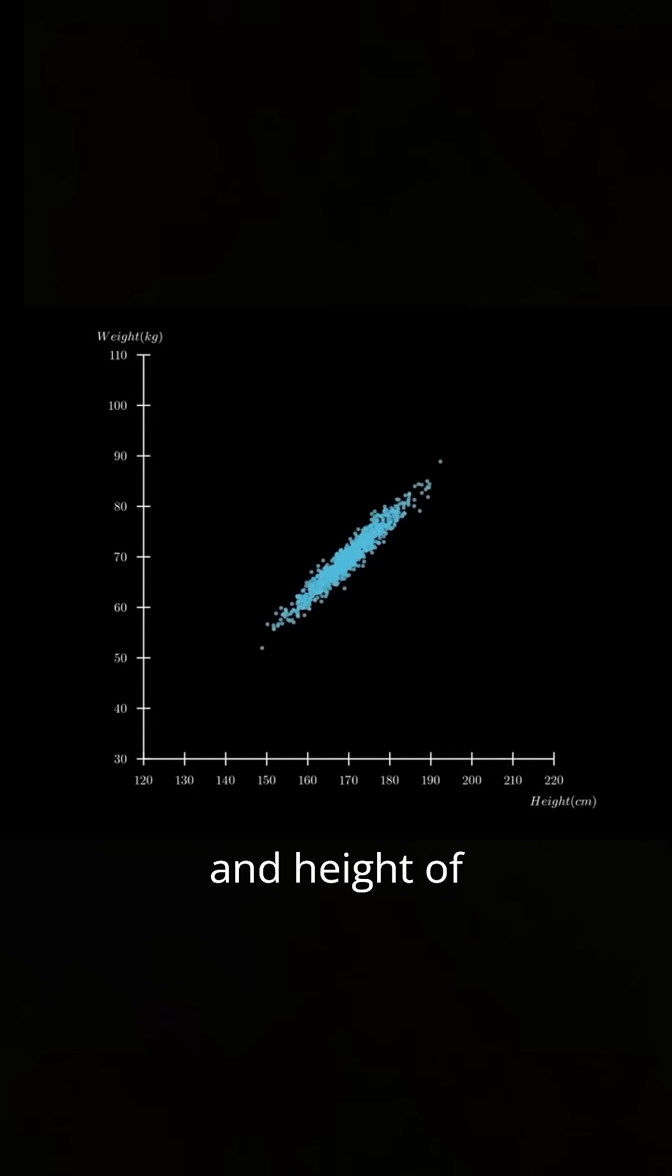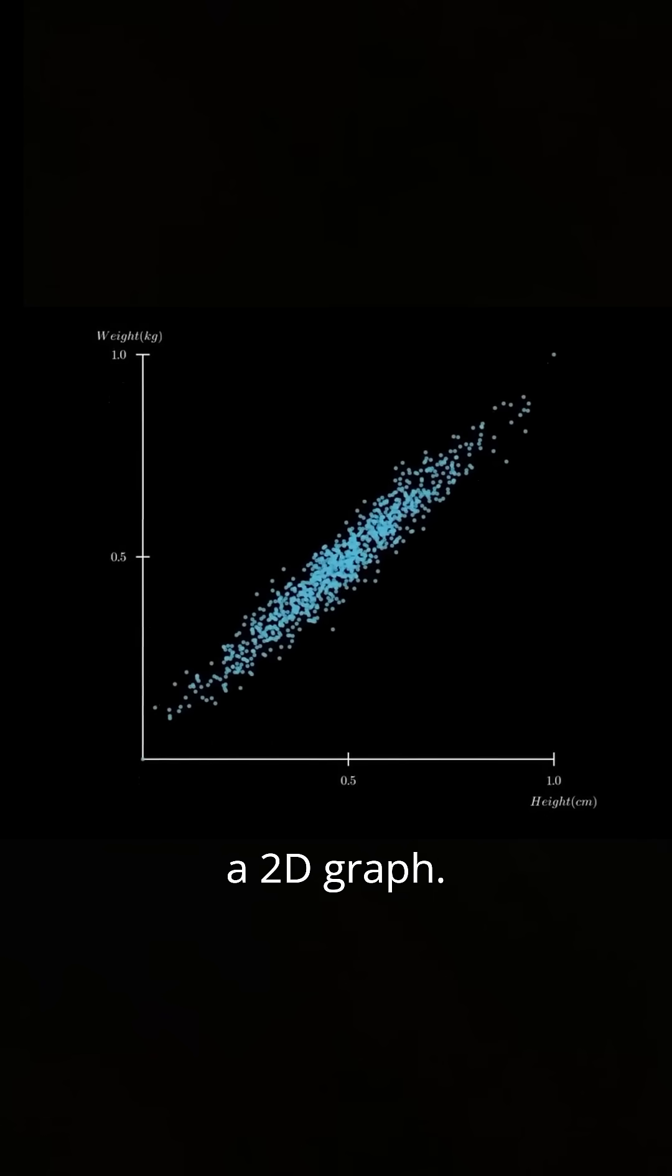Imagine we collect data on the weight and height of 1,000 people and plot it on a 2D graph. The data varies in two main directions, shown by red and green arrows.